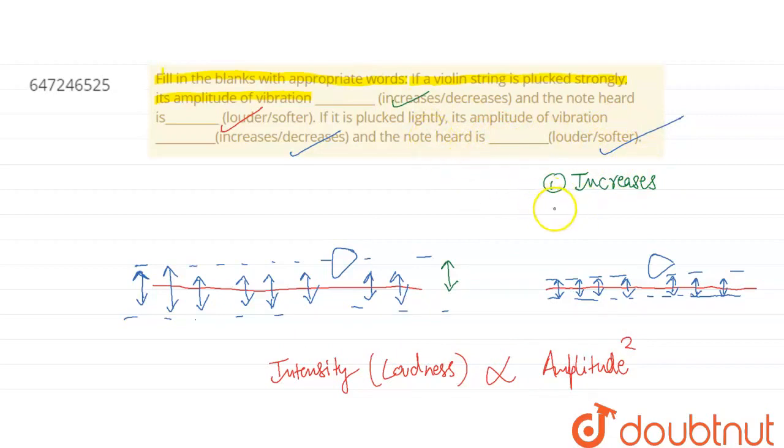So this means our first answer is increases, second dash is louder, third is our answer decreases, and fourth is our answer softer. So this is the right answer.